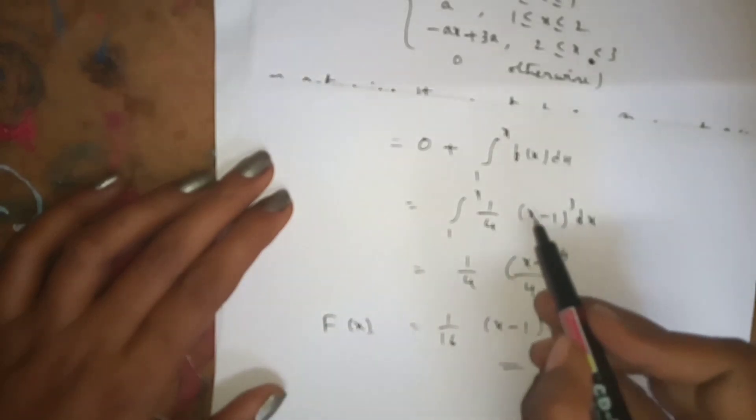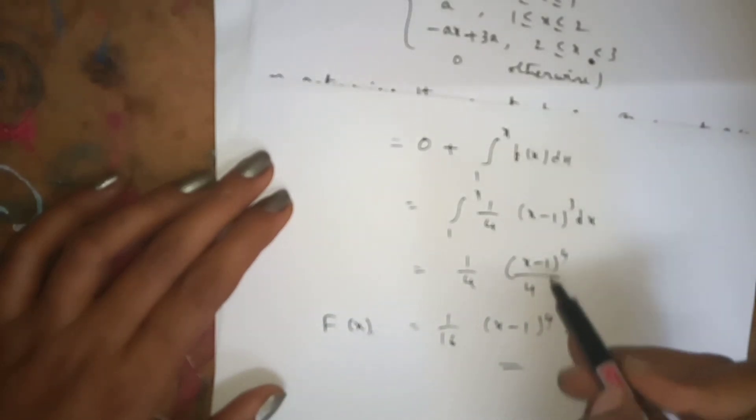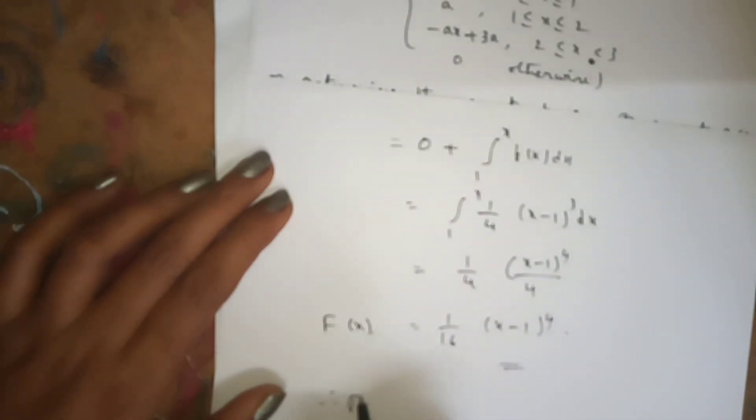The integration of (x-1)³ gives (x-1)⁴/4, so F(x) = (1/16)(x-1)⁴. Therefore the complete distribution function is: F(x) = 0 if x < 1; F(x) = (1/16)(x-1)⁴ if 1 ≤ x ≤ 3; and F(x) = 1 if x > 3. This is the final answer. Thank you.